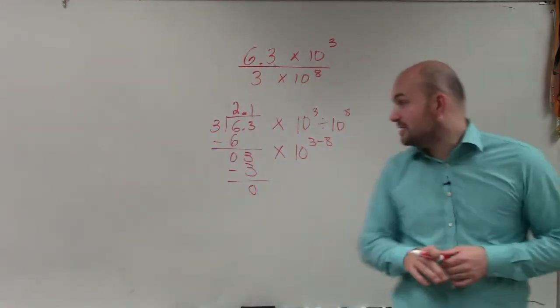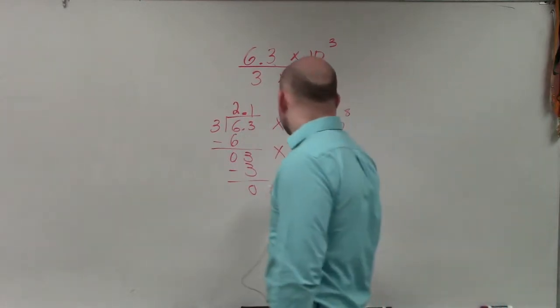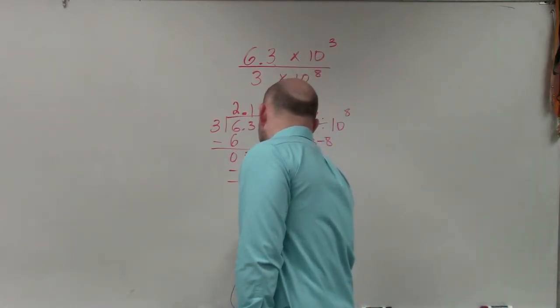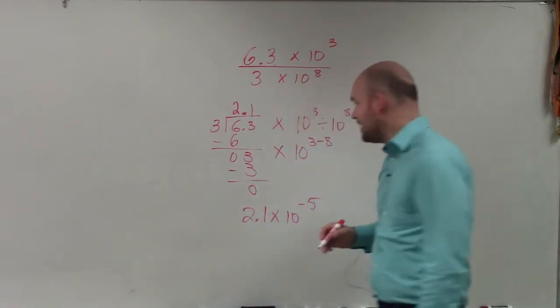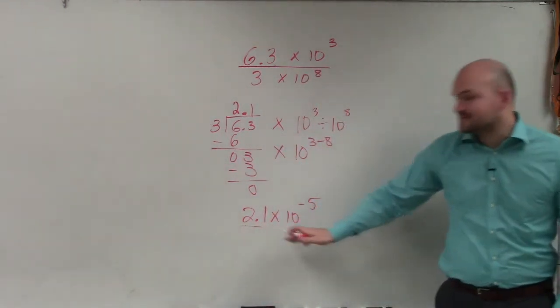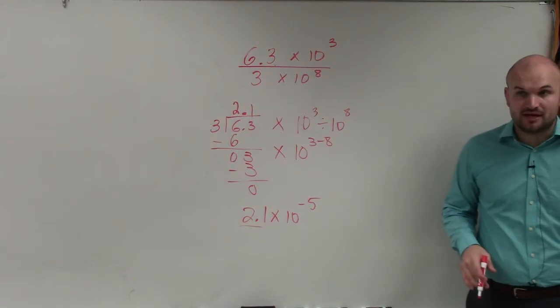And then there's nothing else for me to bring down. So therefore, it goes in there 2.1 times. So my answer is 2.1 times 10 to the negative 5th power. And again, my a is between 0 and 10. So that covers it.